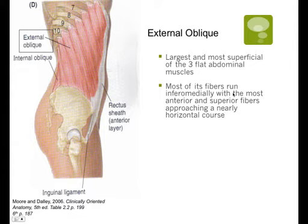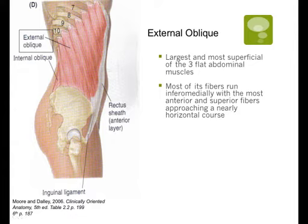The external oblique is the largest and most superficial of the three flat muscles. It arises from the external surface of ribs 5 through 12, and attaches into the rectus sheath, eventually into the linea alba, and also onto the front of the iliac crest. Most of its fibers run inferior medially, with the most anterior superior fibers approaching a nearly horizontal course. Its primary function, along with the internal obliques, is to cause flexion, rotation, and side bending of the trunk.